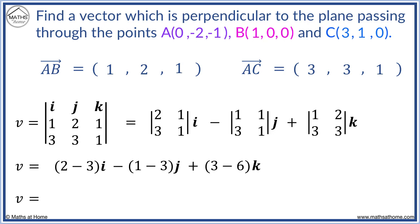We obtain -1i plus 2j minus 3k. We can write the vector like so.